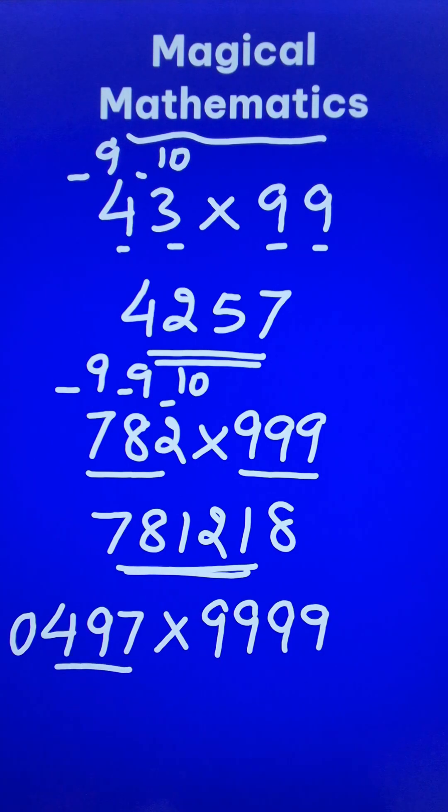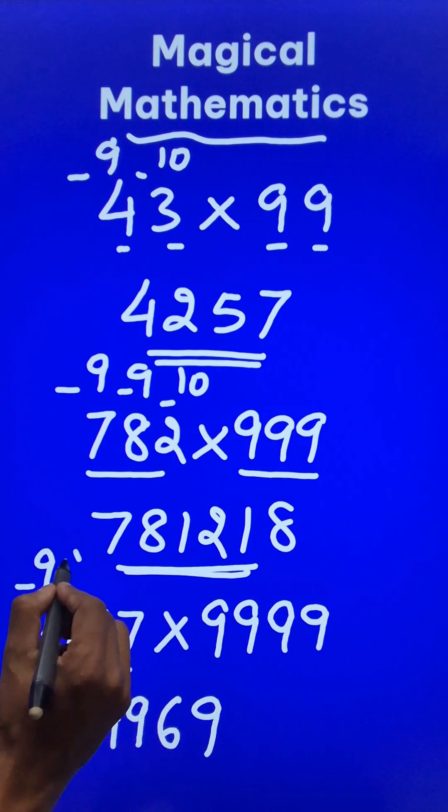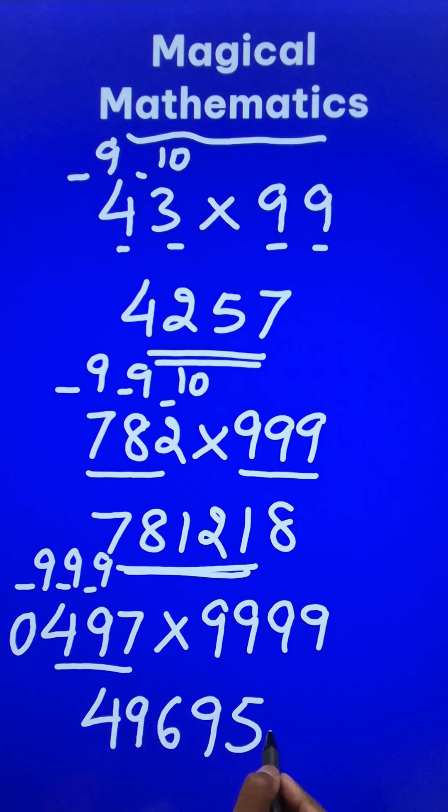Now 497 reduced by 1 gives us 496. 9 minus 0 is 9, 9 minus 4 is 5, 9 minus 9 is 0, and finally 10 minus 7 is 3, which is your answer.